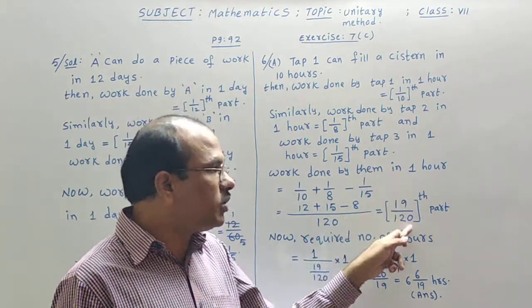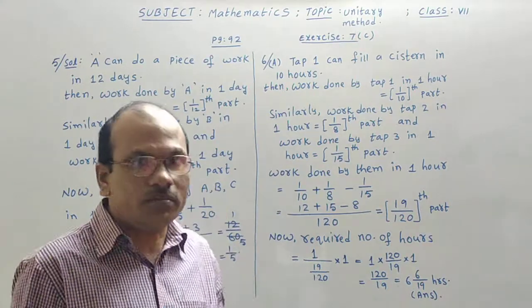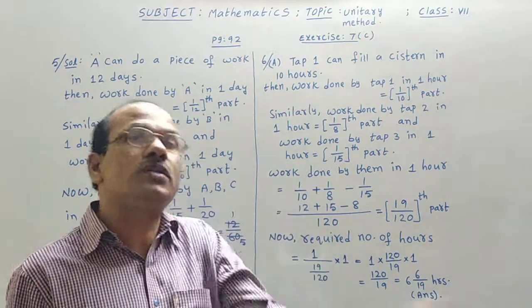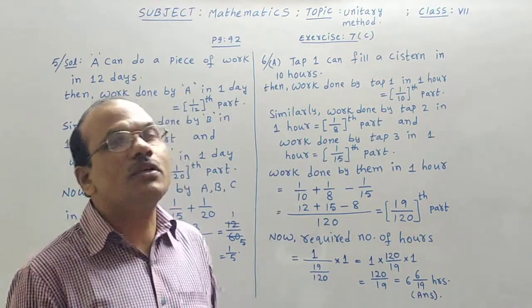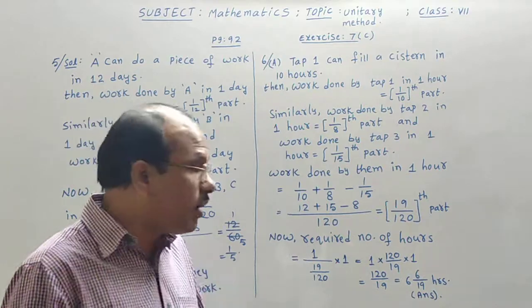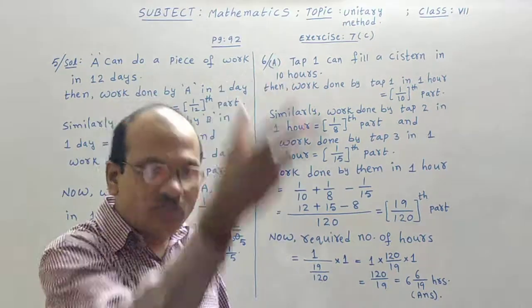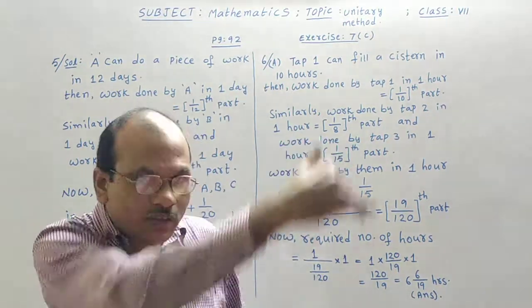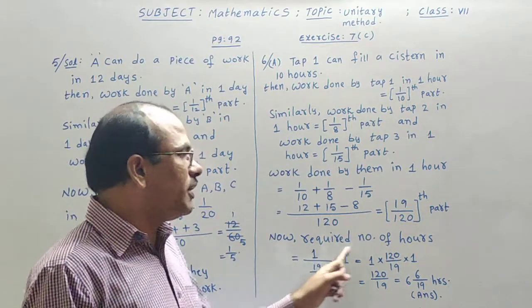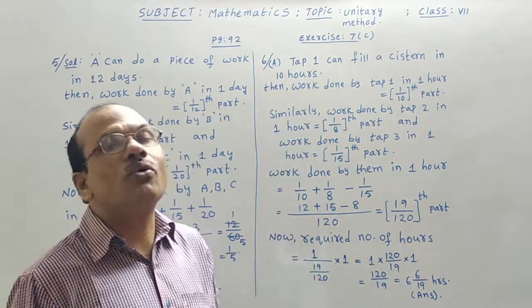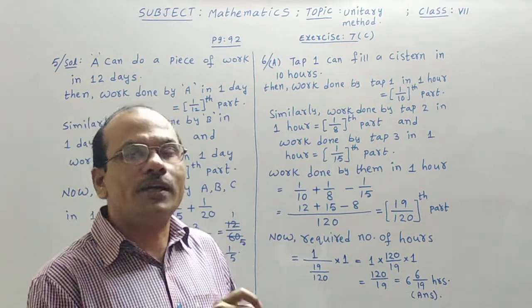So, 19 by 120th part of the system will be filled in one hour of time. Then to fill the whole system, that is one system. Whole means one system. To fill the whole system or one system, how much time is required by the three taps? That means two are busy with filling it, one is busy with emptying the water, removing the water from it. Then, now, required number of hours to fill the whole system with the help of these three taps when we open in the 80th time. That is the condition. Then what to do?